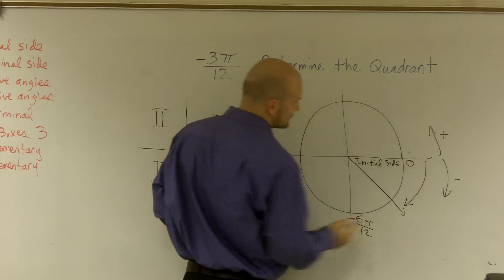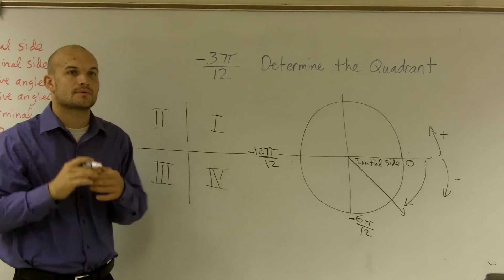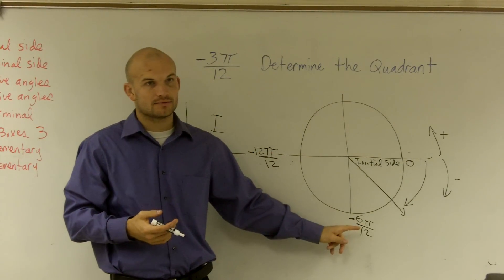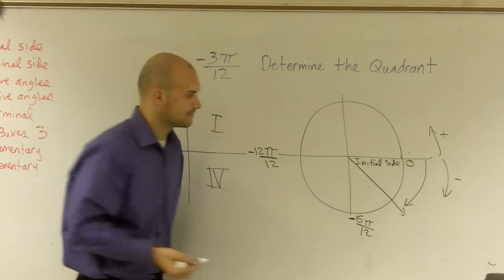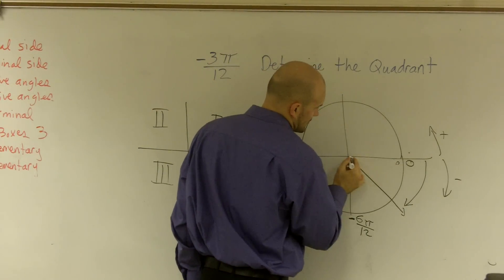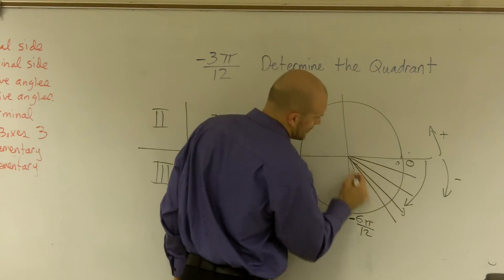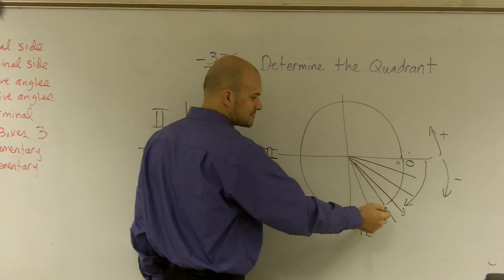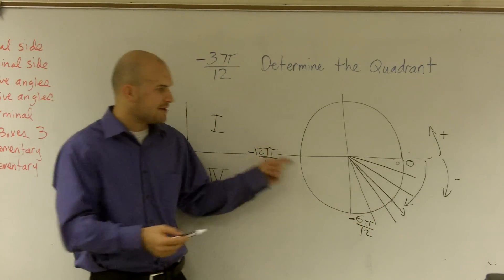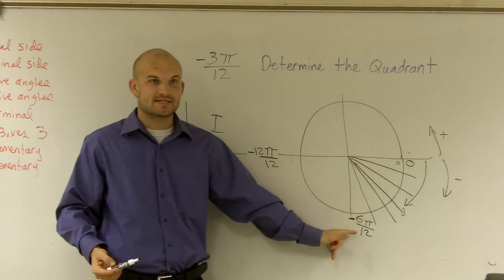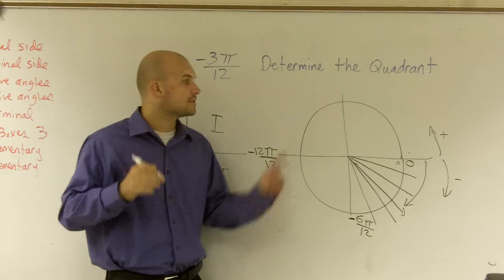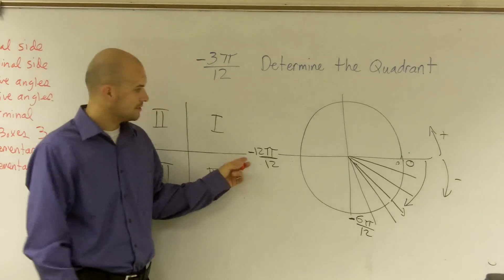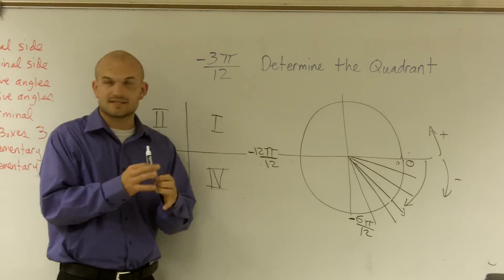So the angle would be right here. Question: where did you get the negative 6pi over 12? If this is 12 over 12 pi, and here's 0 to 12, halfway would be 6. If I segmented this circle into 12, this would be 6, so halfway there would be 6pi over 12. Now, negative is always going to be clockwise — negative just tells us what direction we're going in.